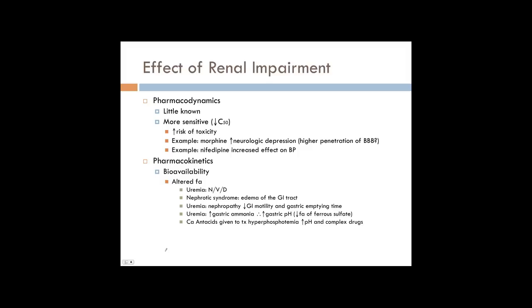We already know that drugs affect pharmacokinetics. But remember, pharmacokinetics is the relationship between concentration and effect — at what concentration do we get what effect? Does renal impairment change this? We don't really know too much. We know that there may be more sensitivity. In other words, you may have a lower C50. C50 is the concentration where you get half the maximal effect, so you may have a little more sensitivity.